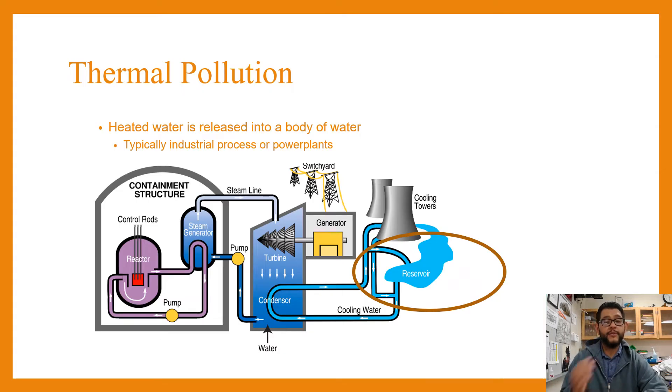So in the previous PowerPoint we mentioned how you can end up with low dissolved oxygen when you end up with cultural eutrophication. Well here's a very good example of why this is a problem. You can end up with something called thermal pollution.